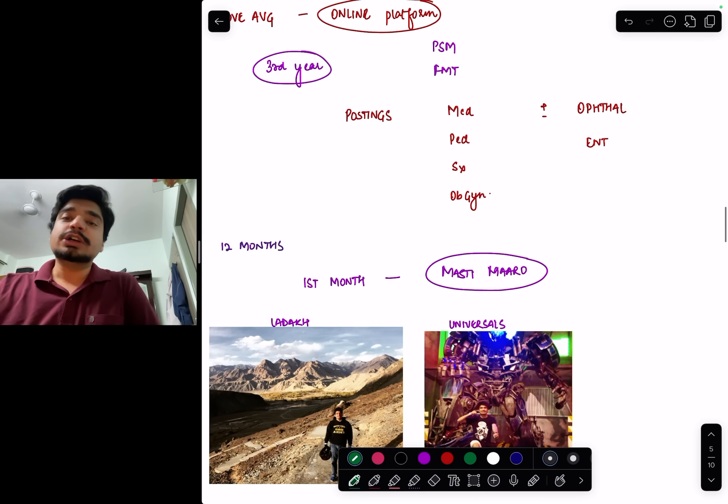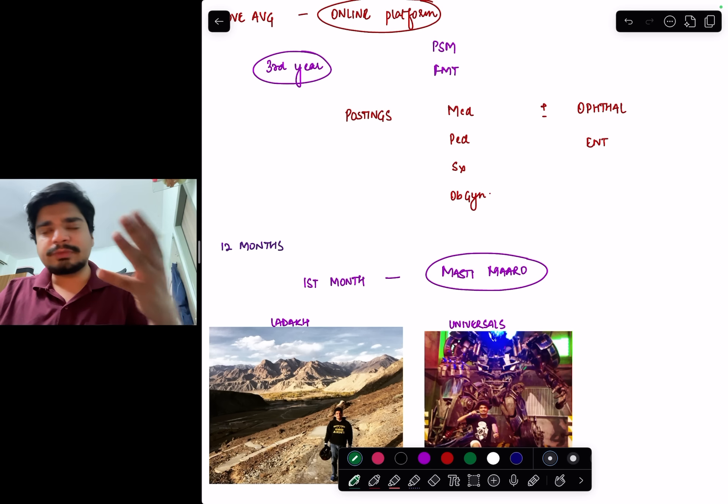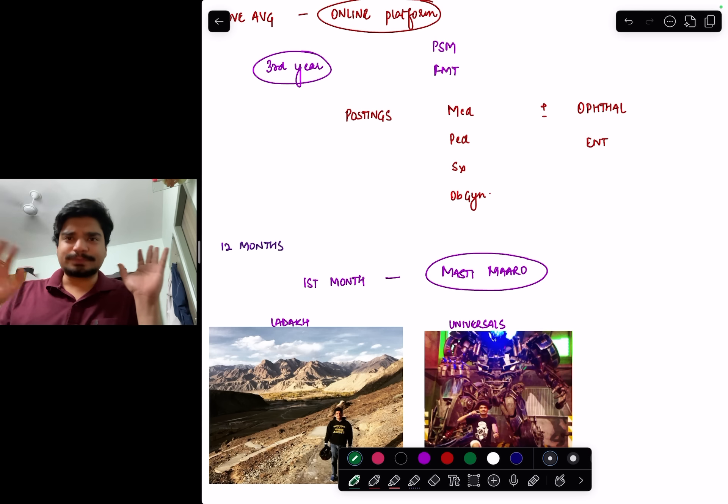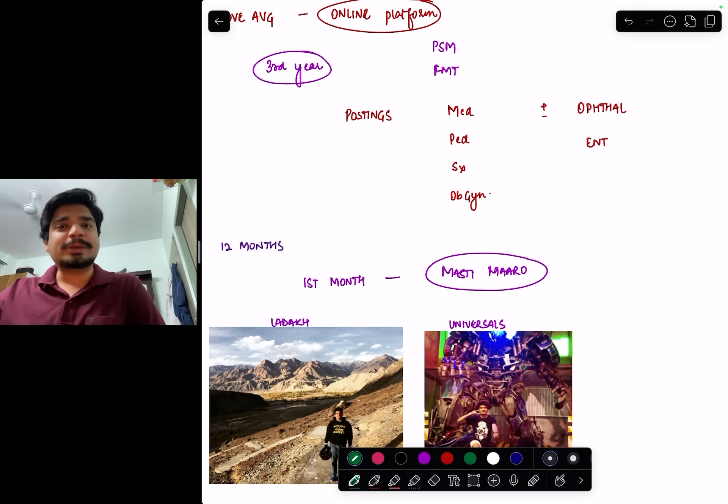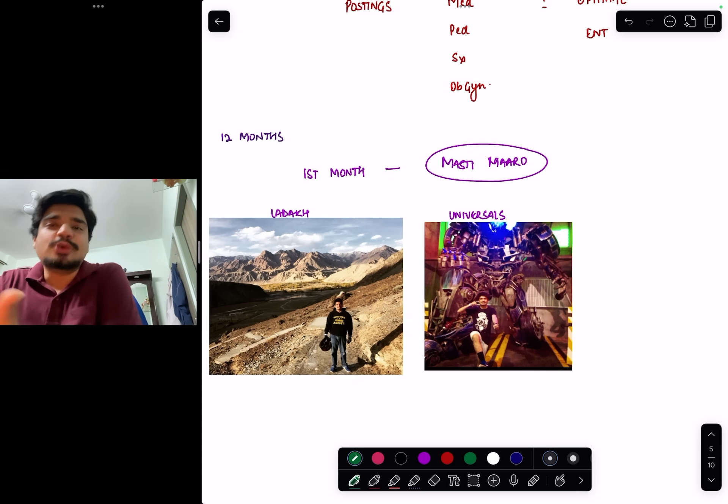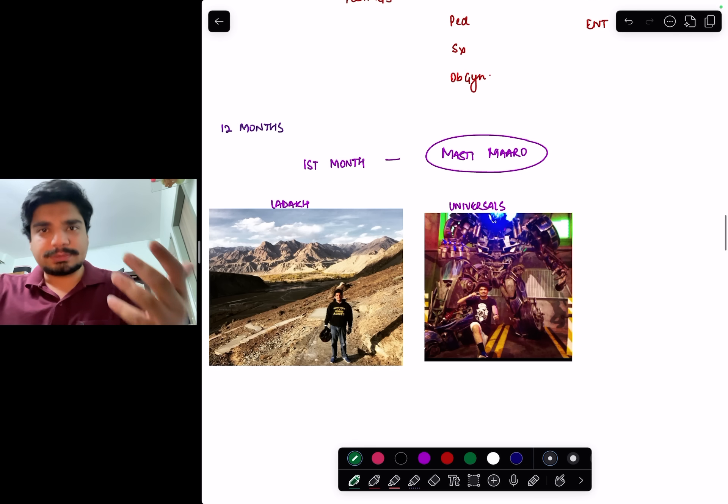Let's assume you've taken an online platform. In third year, what should be your goal? You'll have PSM and FMT. Your postings will be medicine, surgery, ophthalmology, and ENT. You have one year for third prof in which you'll have just two subjects - PSM and forensic medicine and toxicology. What's the point of life if you don't enjoy it? Post my second prof I went to Ladakh, post my third prof I went to Singapore to Universal. Enjoy, travel - that's the spice of life. That travel will give you motivation. Study hard but party harder - that should be the motivation.